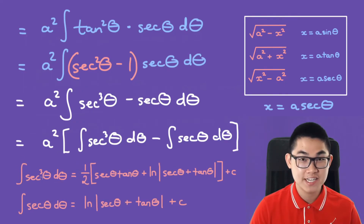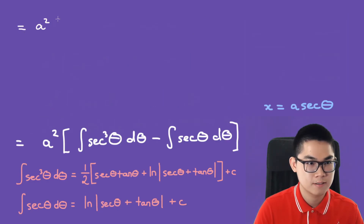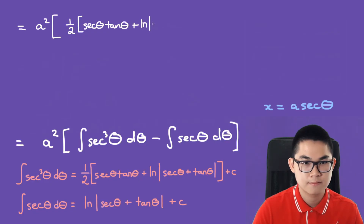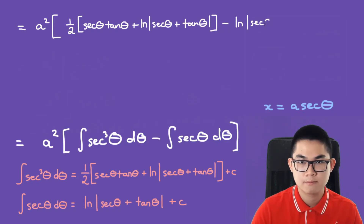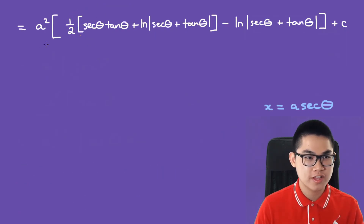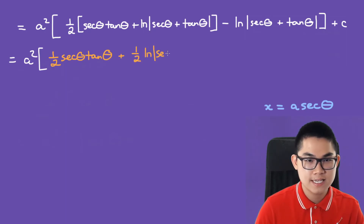I've already solved the integral of secant cubed and secant in a separate video, so these are the antiderivatives. The antiderivative of secant cubed gives us one half times secant times tan plus one half times the ln of secant plus tan.